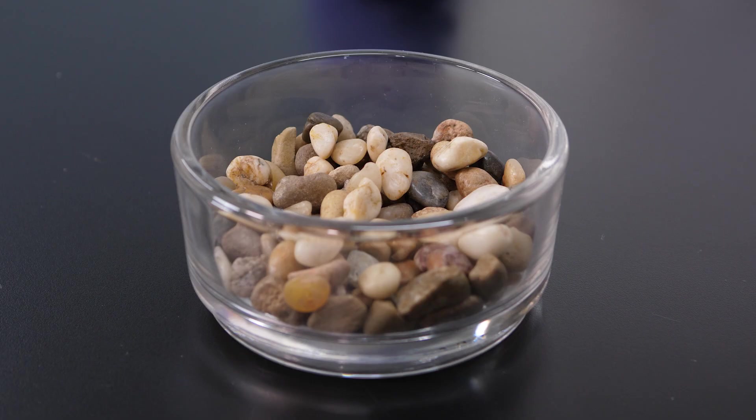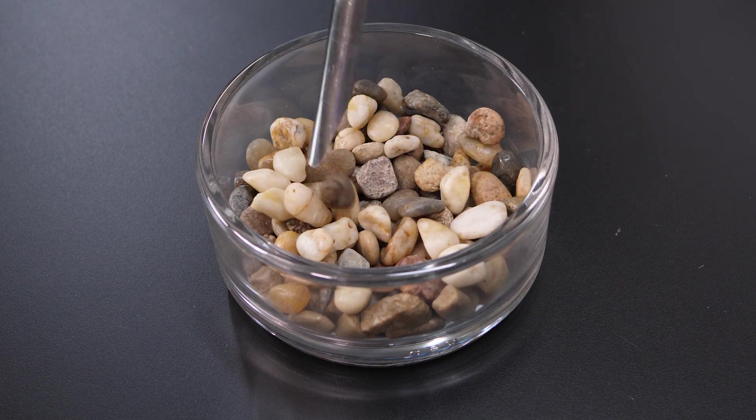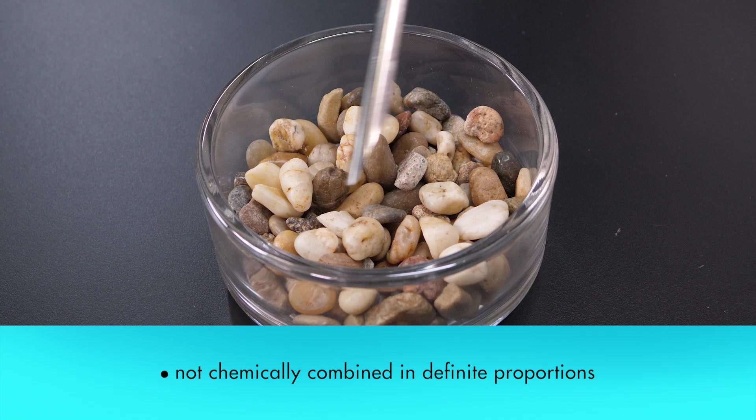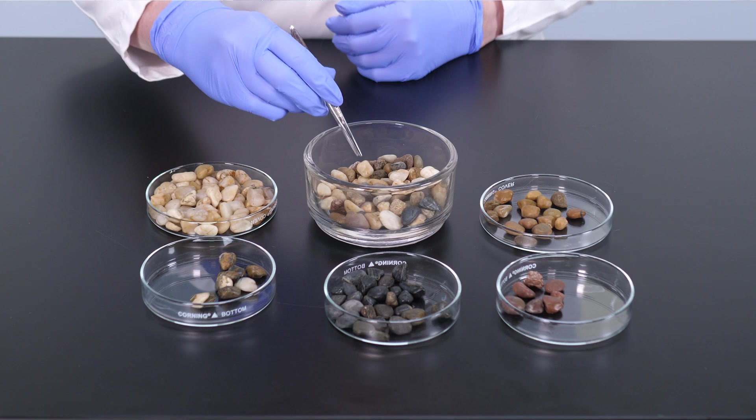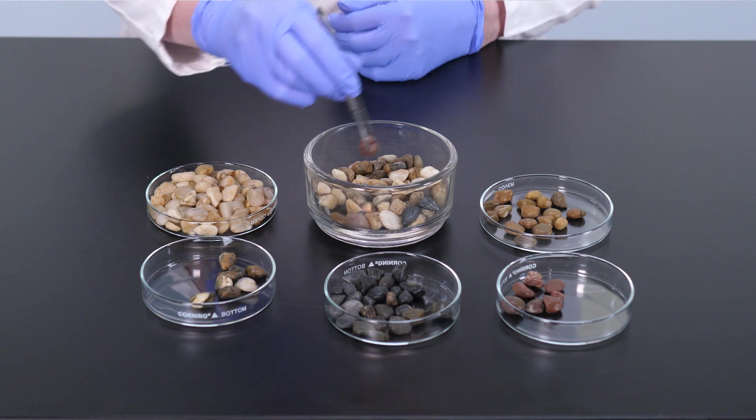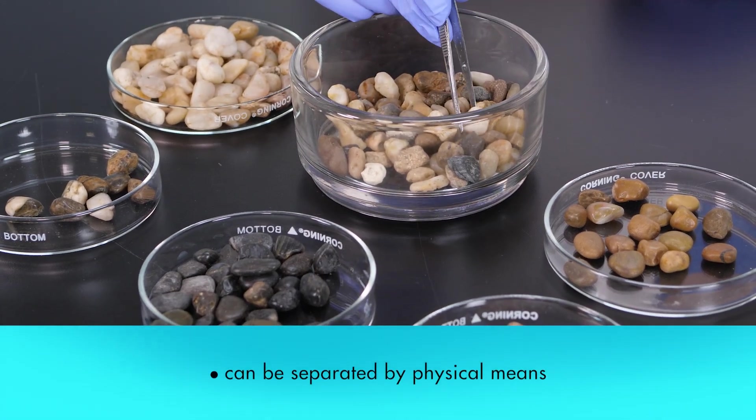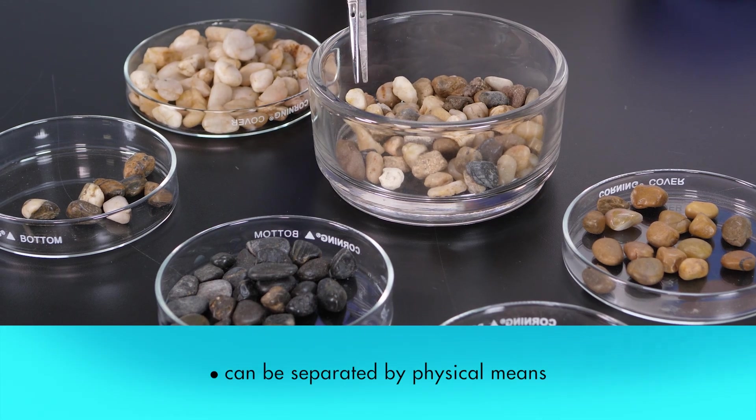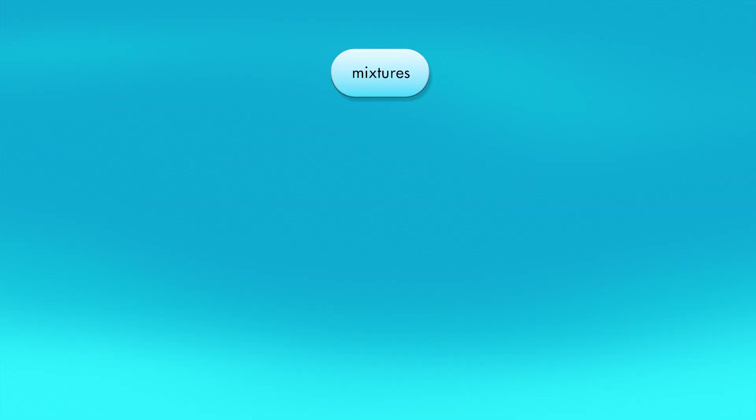Does this sample of gravel meet the criteria for a mixture? This sample contains stones of various shapes, sizes, and colors. We can see that there are more white stones than any other color. Since the components do not chemically combine in definite proportions, the sample meets the first criterion for a mixture. By picking out stones of each type and placing them in separate piles, we can easily separate the components of this sample. Since the components can be separated by physical means, the sample meets the second criterion. Since the sample meets both criteria for a mixture, we can conclude that it is a mixture.